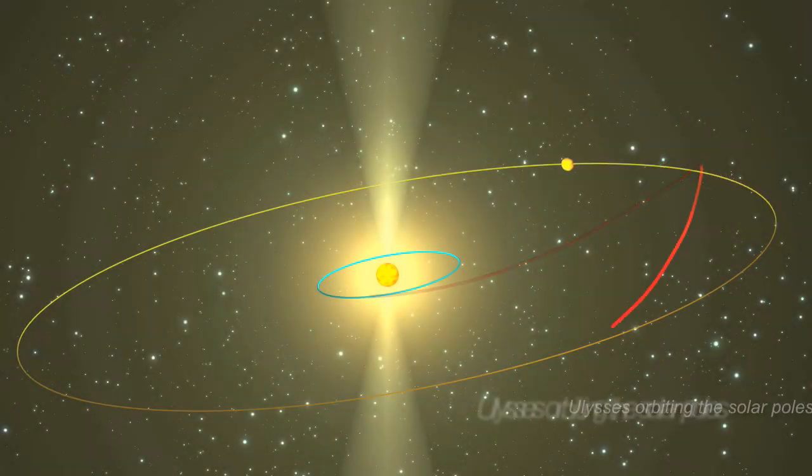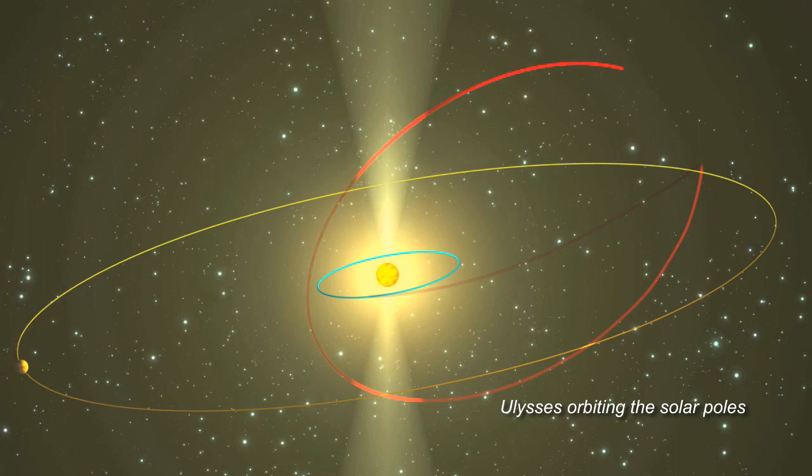Ulysses was the first mission to fly over the Sun's poles, making it possible to map the solar wind in 3D for the first time.